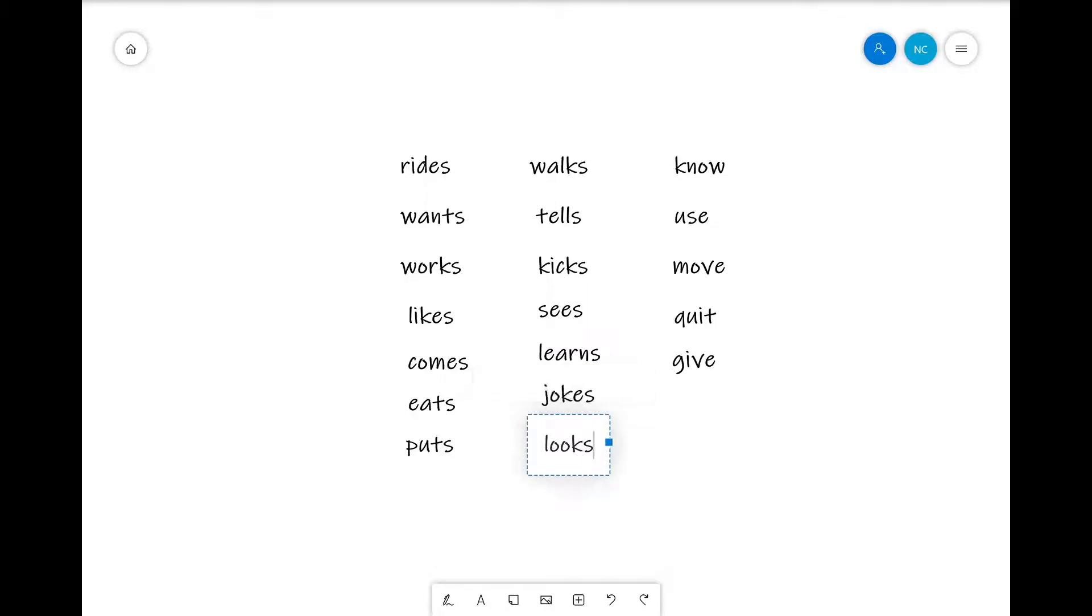Look to looks, know to knows, use to uses, move to moves, quit to quits. Quit is like stop doing it, saying bye bye. Give to gives. So this is what we call the regular form. We just add an s at the end of the action word, the verb.